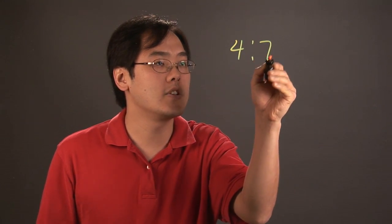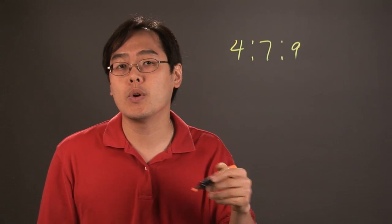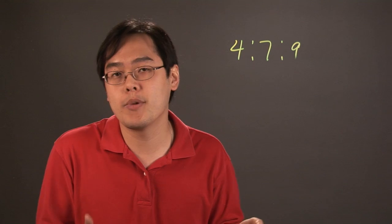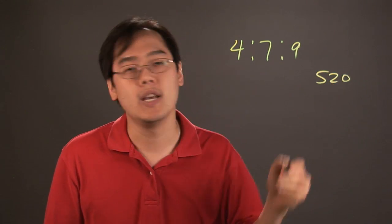Now, suppose you have an example where the extended ratio was 4 to 7 to 9, and you want to use this to find a structure of a perimeter, let's just say 520.